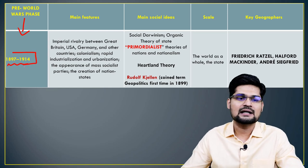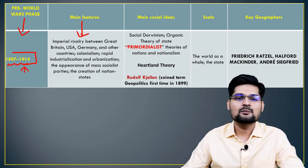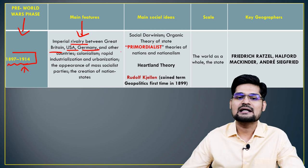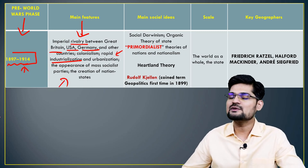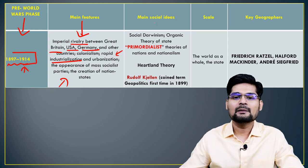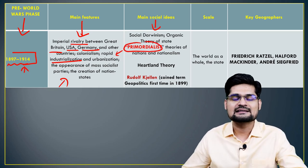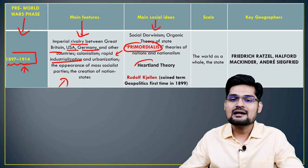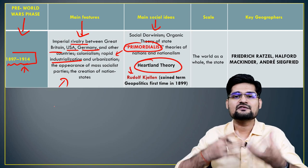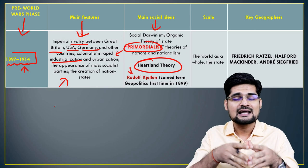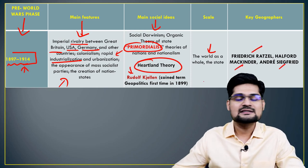The first sub-phase of the modern period runs from Ratzel in 1897 to 1914 — just before World War I. Main features include imperial rivalry between Great Britain, the US, Germany, and other colonial states, as well as rapid industrialization, urbanization, and the rise of political separatism in Europe. The main social ideas during this phase were primordialist theories, social Darwinistic theories, organic state theories, Mackinder's heartland theory, and Rudolf Kjellén, who coined the word 'geopolitics' in 1899.